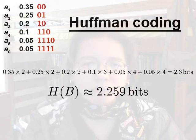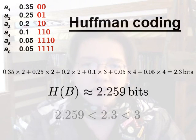which is pretty close to the entropy of 2.259 bits, and much better than a 3-bit fixed-length code. So that's how Huffman coding works. It's another practical application of information theory.